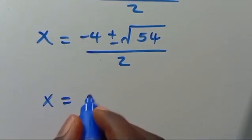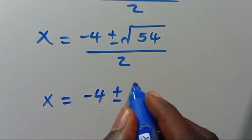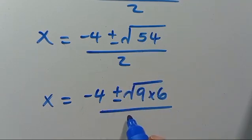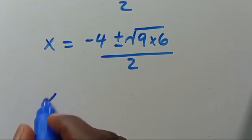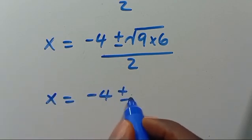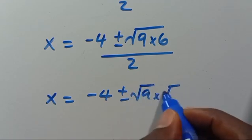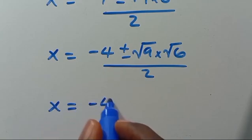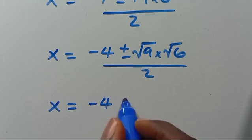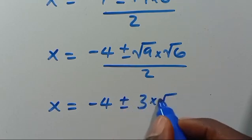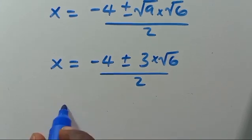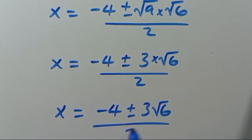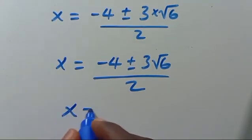Then we have X equals minus 4, positive or negative — 54 is 9 times 6 — over 2. So X equals minus 4, positive or negative, square root of 9 times 6, over 2. This gives X equals minus 4, positive or negative, 3 times the square root of 6, over 2, where we also have X equals 5.